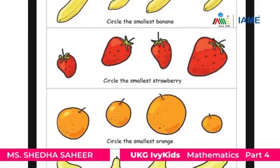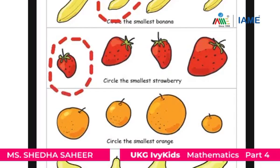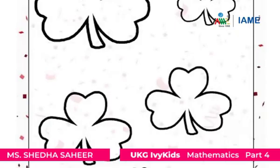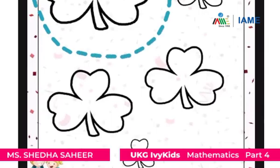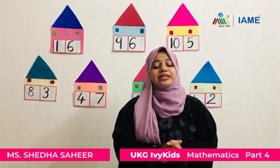Let's find out the smallest fruit in each group. Which is the smallest banana? The circled one is the smallest banana. Now what about the strawberry? The first one is the smallest strawberry. What about the orange? The last one is the smallest orange. What about the pear? The second one. Now you all have understood what is the biggest object and what is the smallest object.